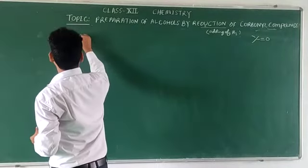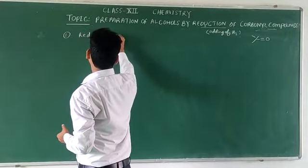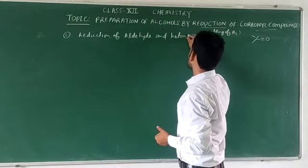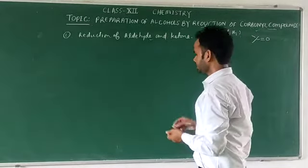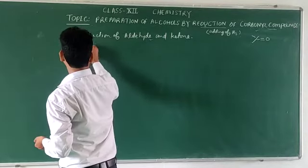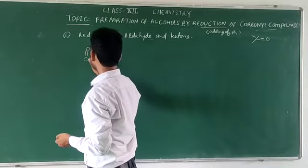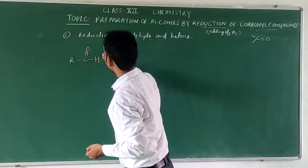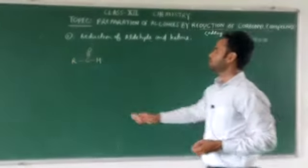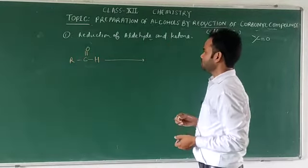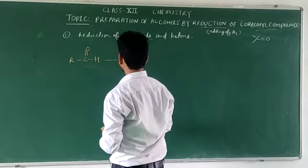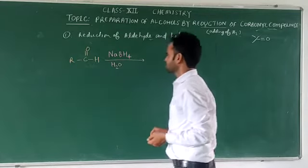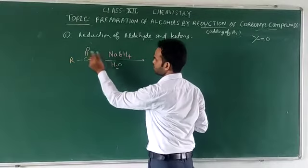We will start with the preparation of alcohol by reduction of aldehydes and ketones. For aldehyde, the functional group is R-CHO. To reduce this aldehyde, we use a weak reducing agent, sodium borohydride, NaBH4, and water.